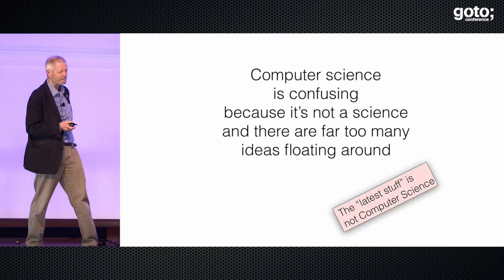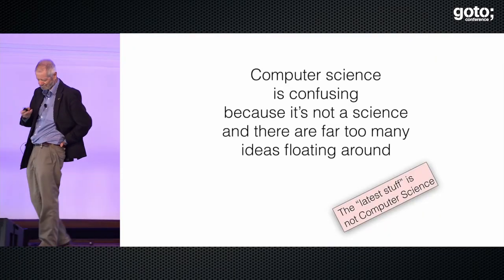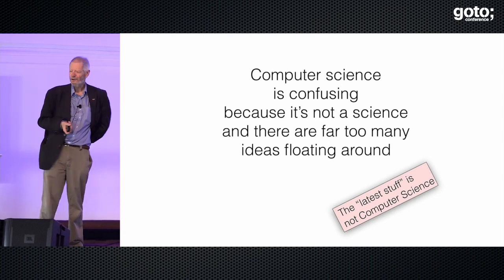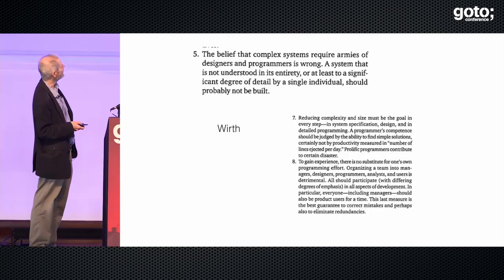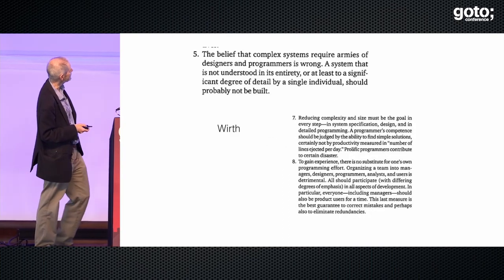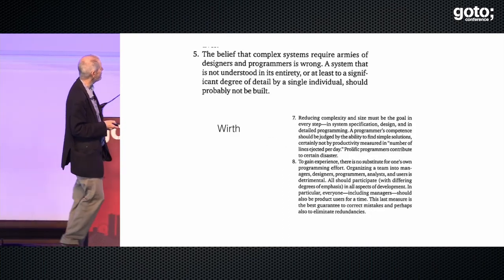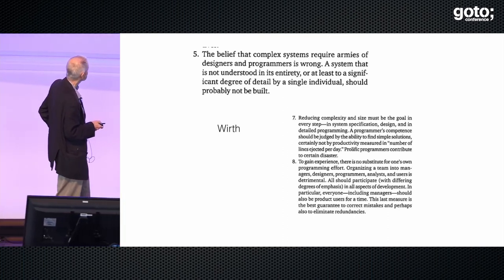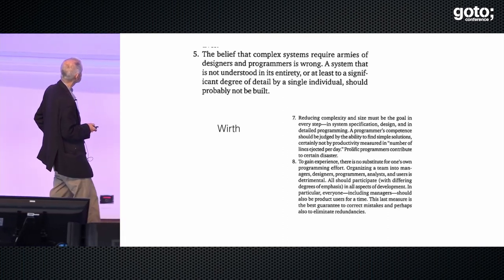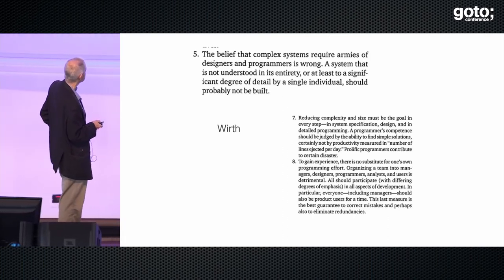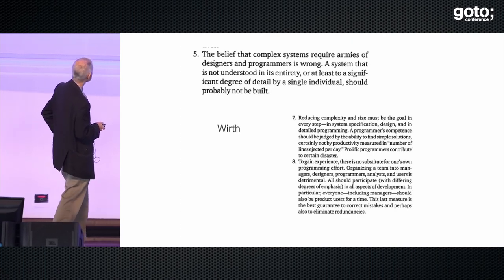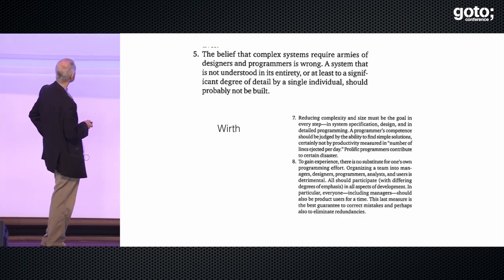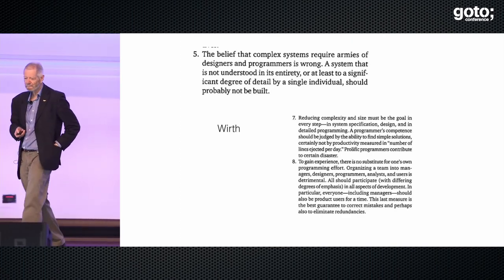Computer science is confusing because it's not a science. And there's an awful lot of stuff floating around. The belief that a complex system requires armies of designers and programmers is wrong — it's a system that is not understood in its entirety, at least to a significant degree, and a single individual should possibly not build it.